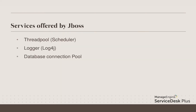Now let's quickly see what different services are offered by the JBoss application server. The first service is the thread pool. Say we have multiple operations running in the application in the background, and each operation will have its own thread.